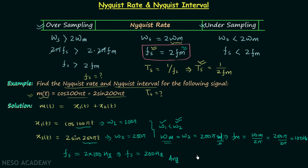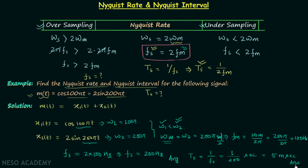To calculate the Nyquist interval Ts, we can use either 1/(2·fm) or directly 1/Fs. Since we have calculated Fs = 200 Hz, we use Ts = 1/200 seconds. Simplifying, Ts = 5 milliseconds. This is our final answer.